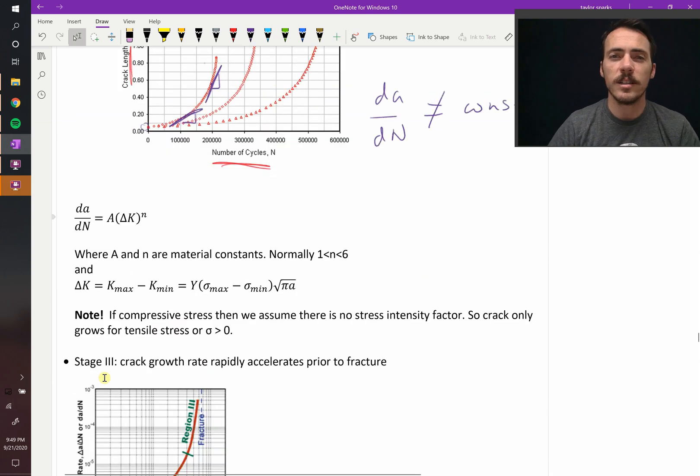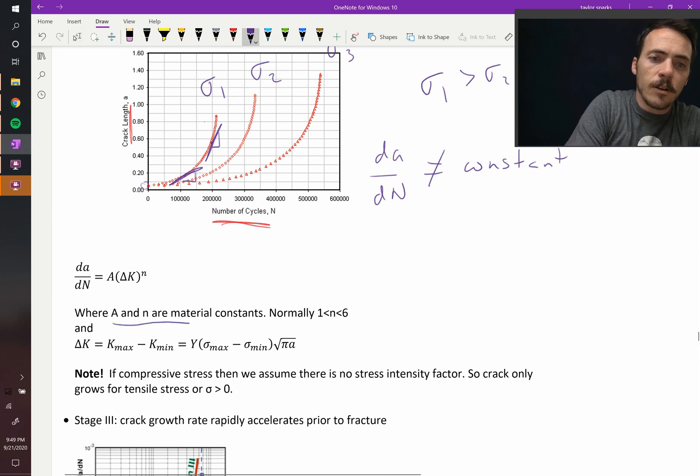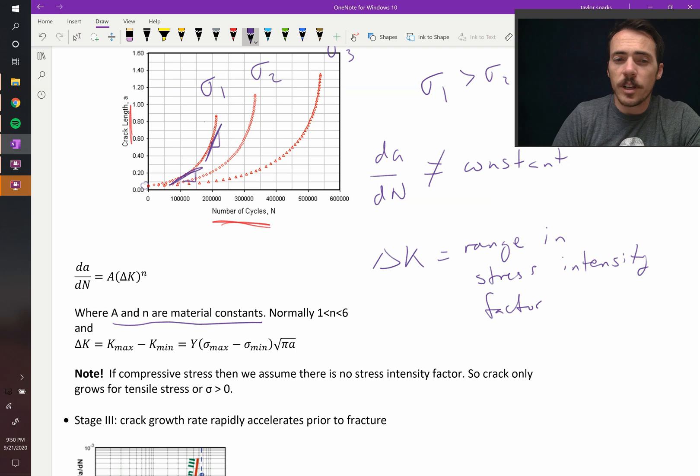We use this expression. dA/dN is equal to A times delta K raised to the N. A and N are material constants. Delta K is the range in the stress intensity factor. Therefore, delta K is equal to the maximum stress intensity minus the minimum. Therefore, it's equal to Y times the maximum stress minus the minimum stress times the square root of pi times A.